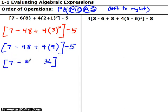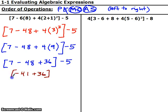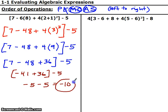So I've got 7 minus 48 plus 36, and the minus 5 out here. There's no more multiplying or dividing, so I'm left with adding and subtracting. Once you're down to only adding and subtracting, these grouping symbols really don't mean anything — I could just throw them away. 7 minus 48 is negative 41, plus 36. Negative 41 plus 36 is negative 5. Now since there's only one number, those parentheses are not necessary. Negative 5 minus 5 is negative 10. That's our final answer.